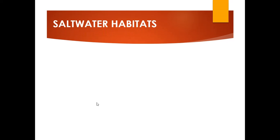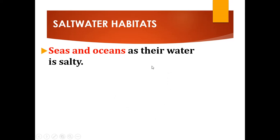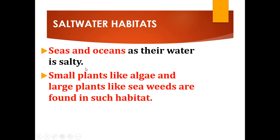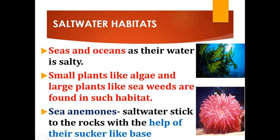Now let's see about saltwater habitats. Seas and oceans are water bodies which are salty. Small plants like algae and large plants like seaweeds are found in saltwater habitats. Sea anemones are also found in saltwater; they stick to rocks with the help of their sucker-like base.